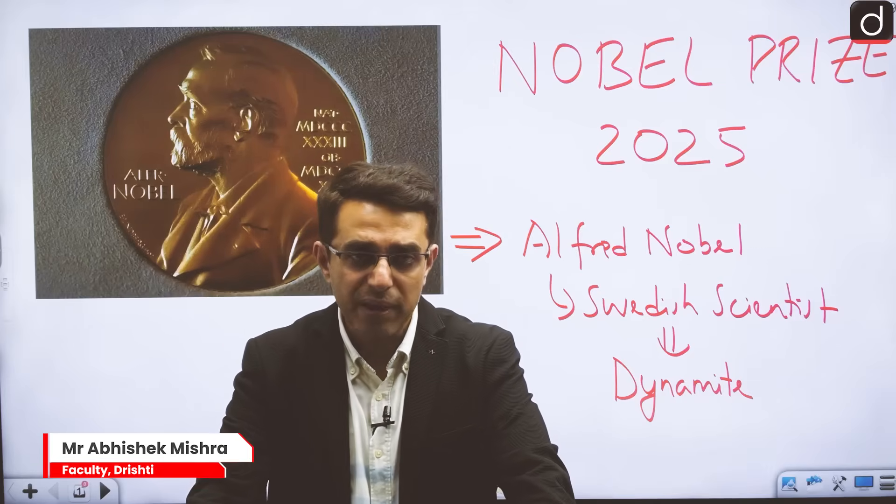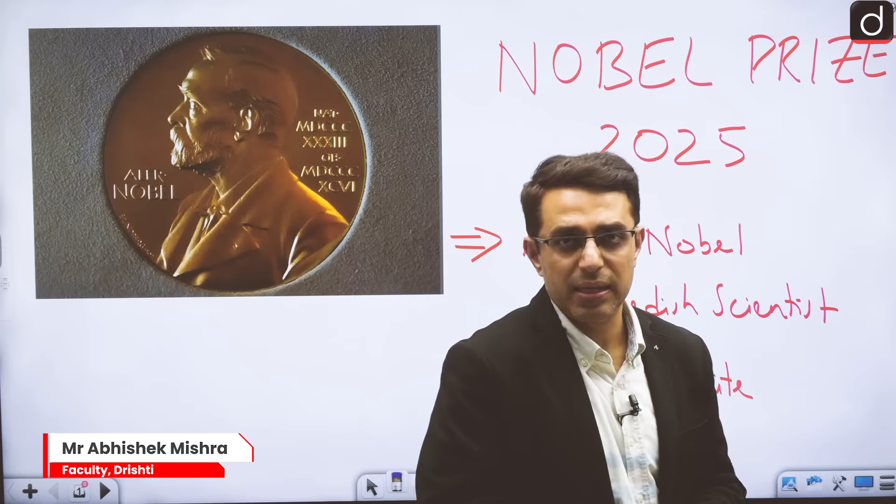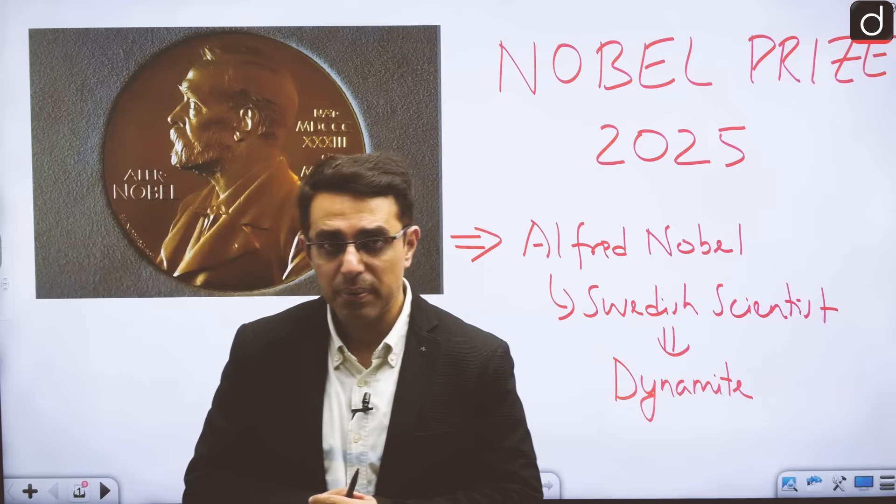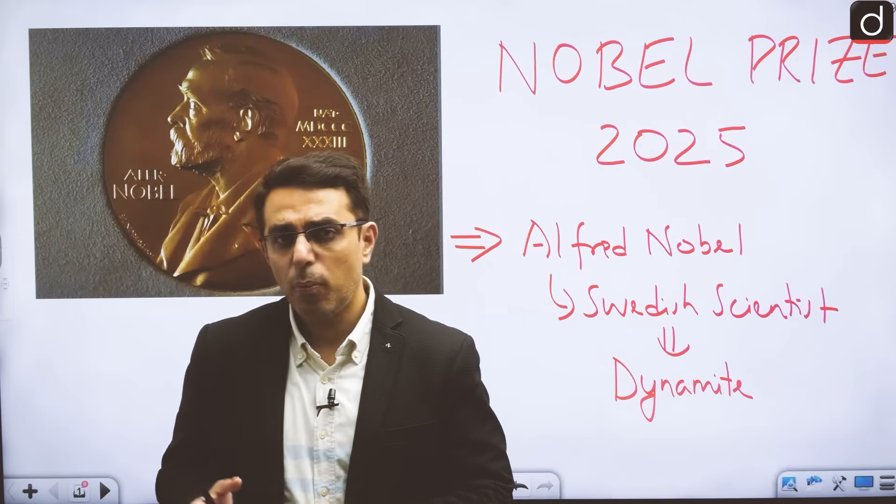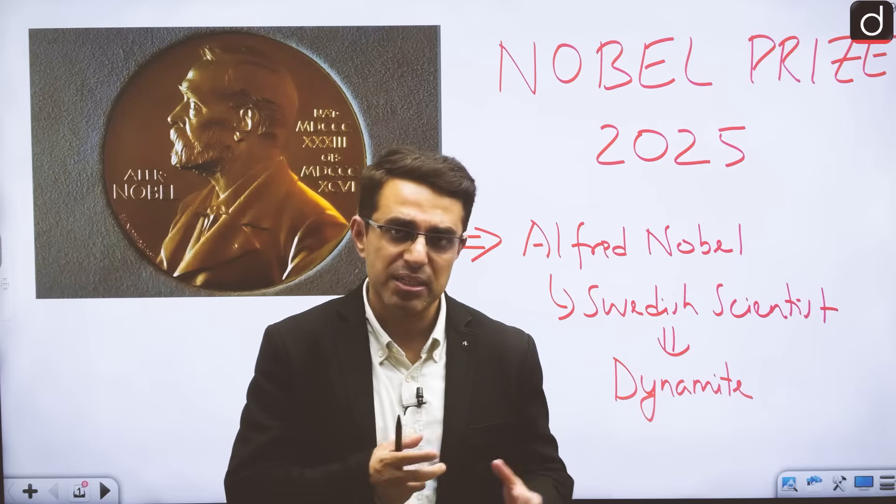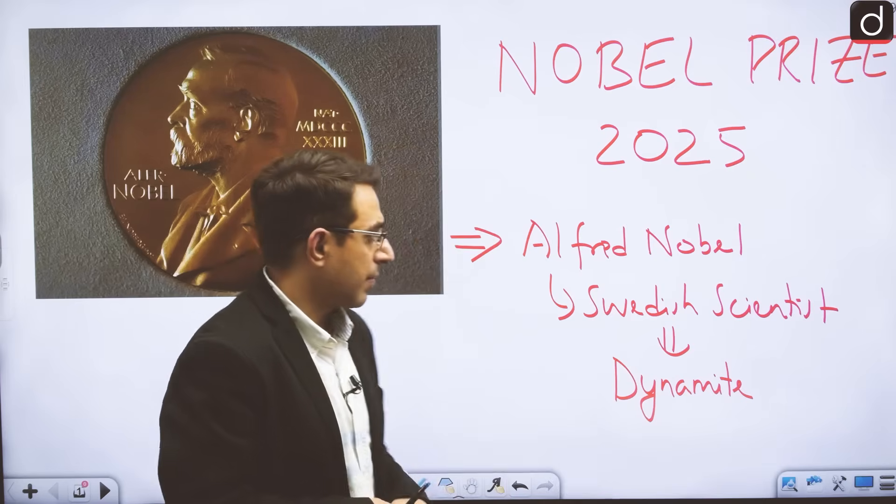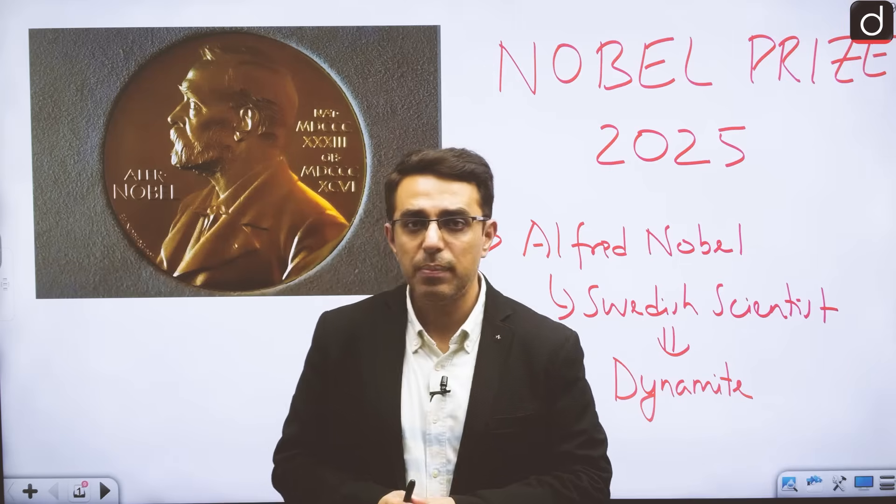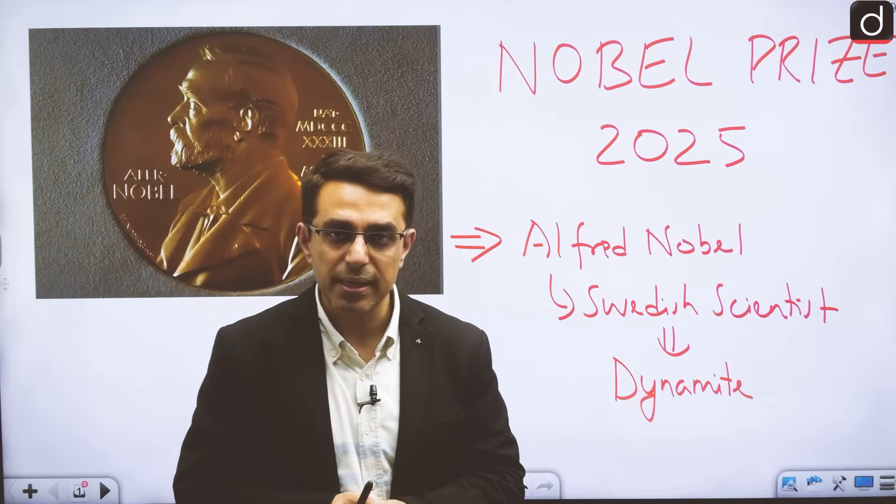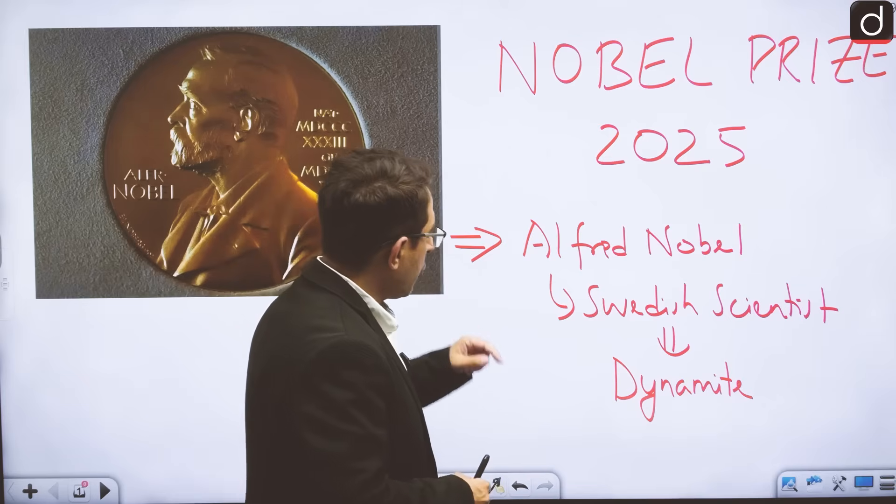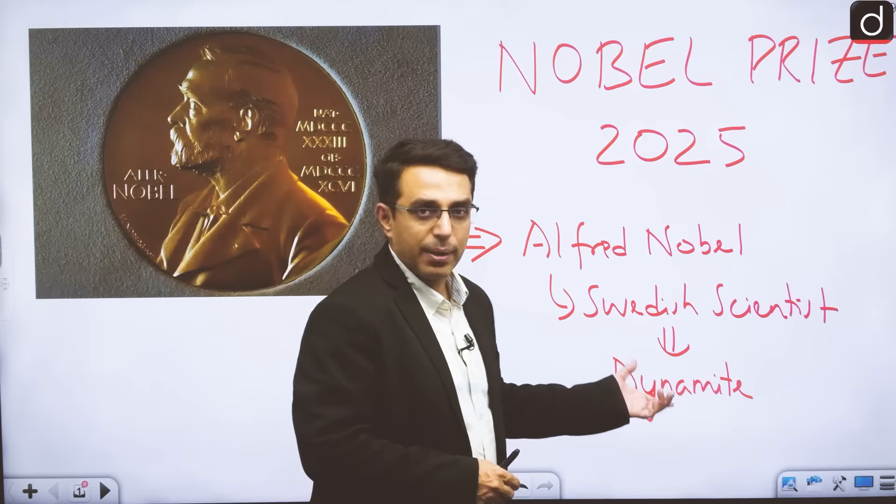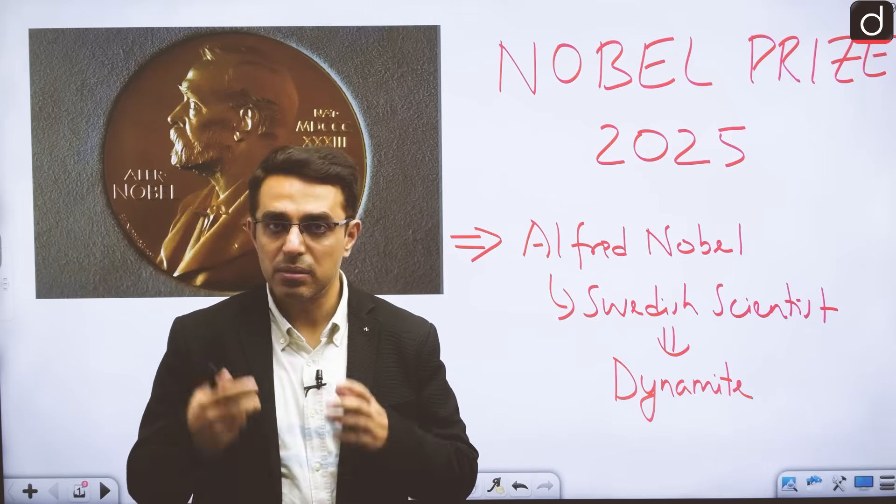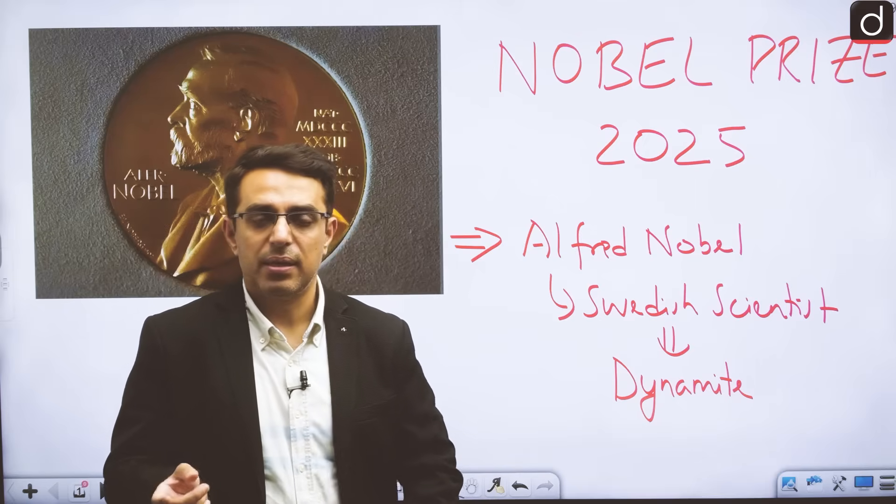Now, let us discuss the Nobel Prize 2025. The Nobel Prizes have been recently announced in six categories. It is an important area from where questions can be asked in UPSC prelims and various other competitive exams. The Nobel Prizes are given because of Alfred Nobel, who is known for the invention of dynamite. Originally five categories Nobel Prizes are given, but later one more category was added.